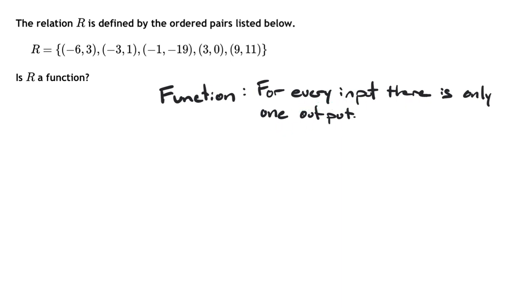So the first thing you have to do is take a look at all of your x values. So I've got negative 6, negative 3, negative 1, 3, and 9. In this example, I don't have any x values repeated.